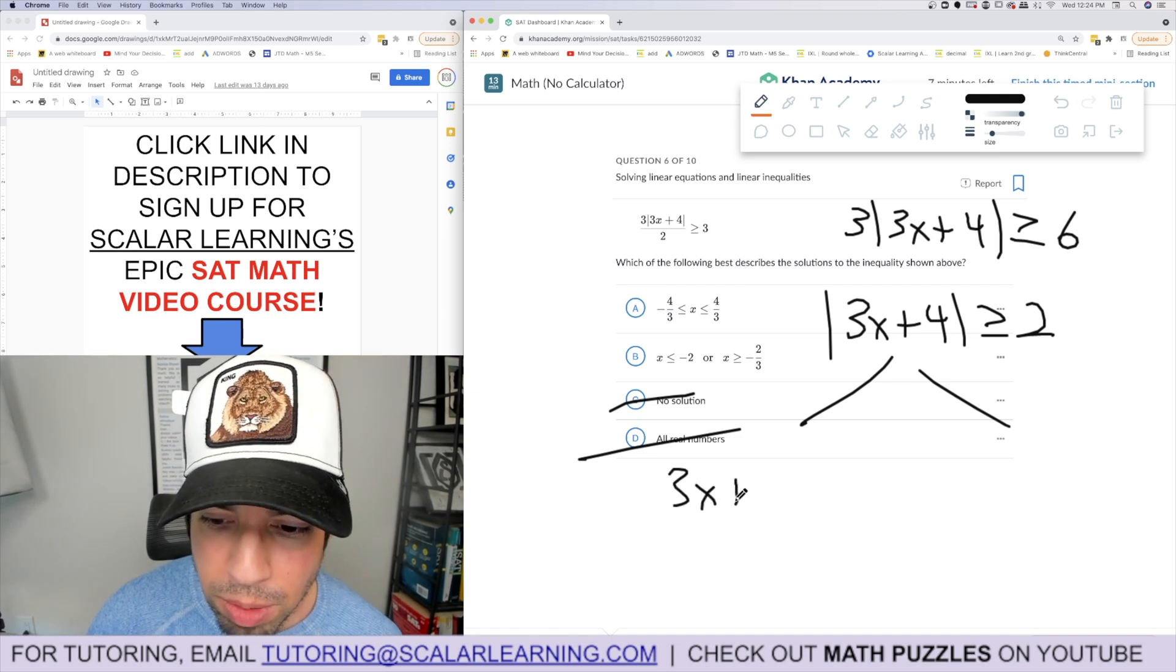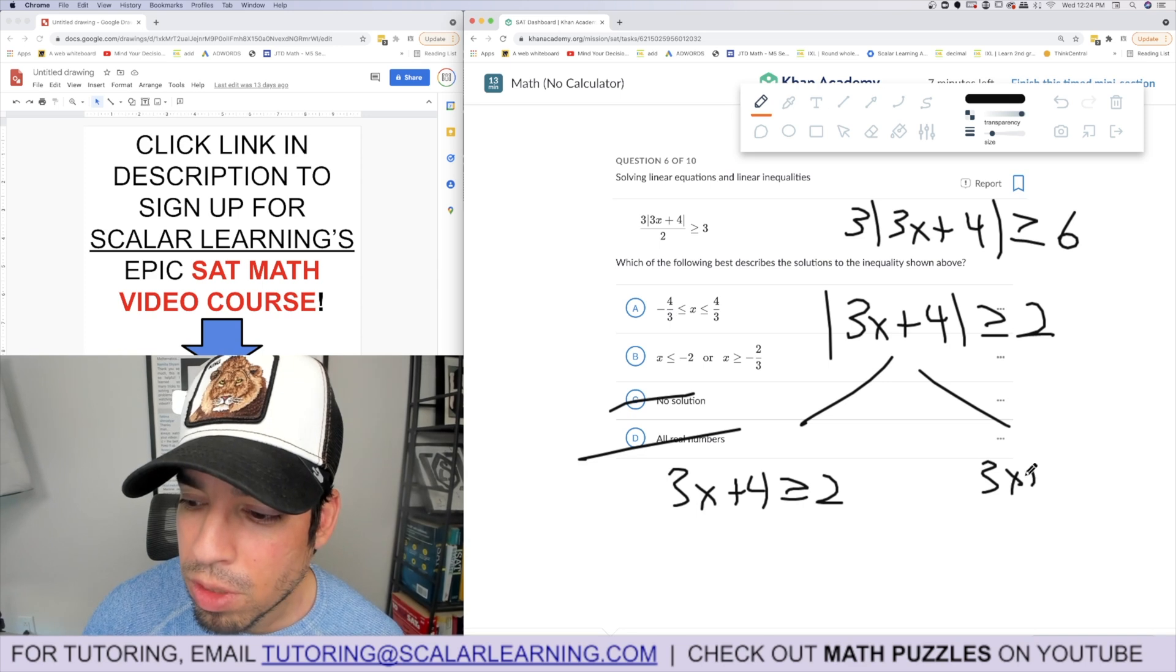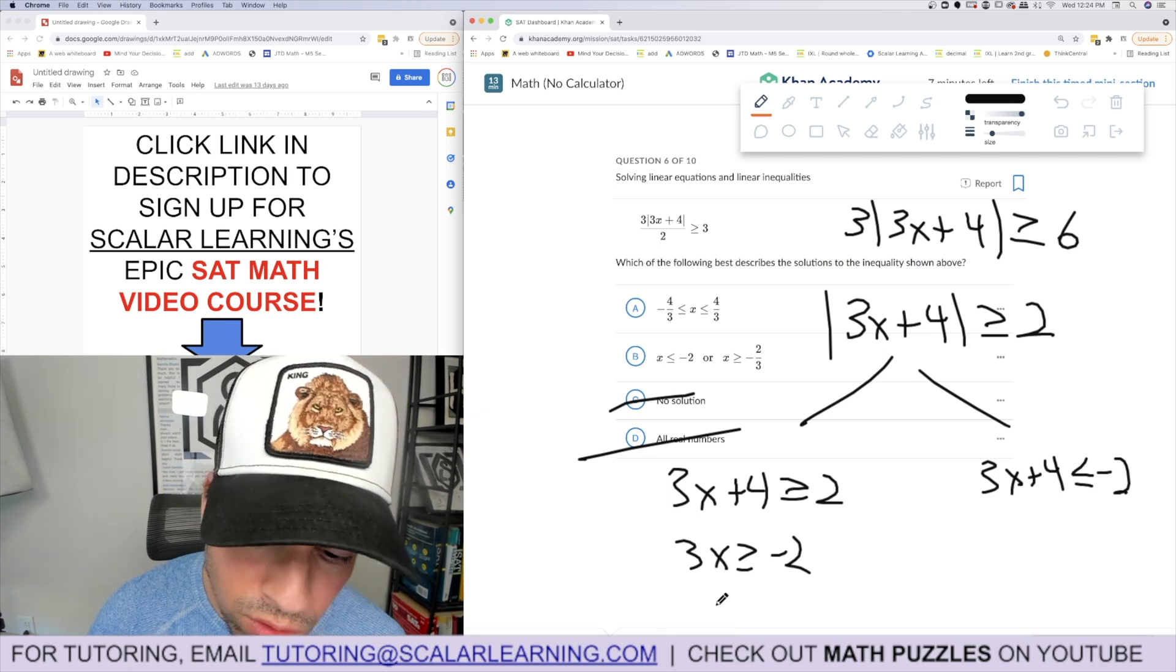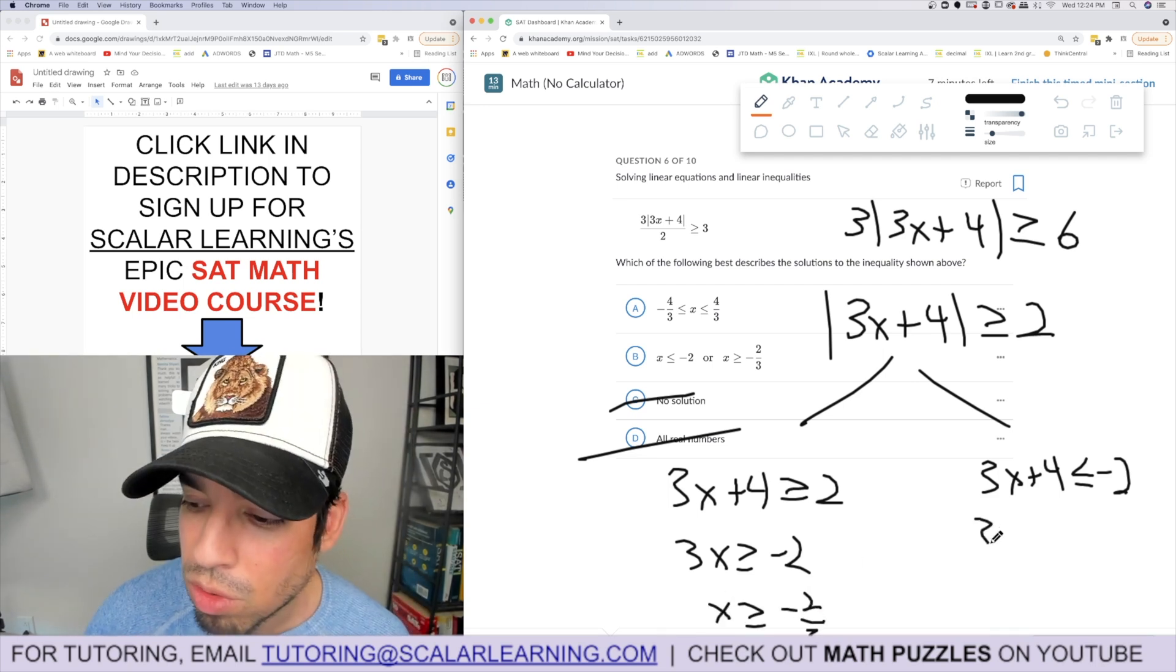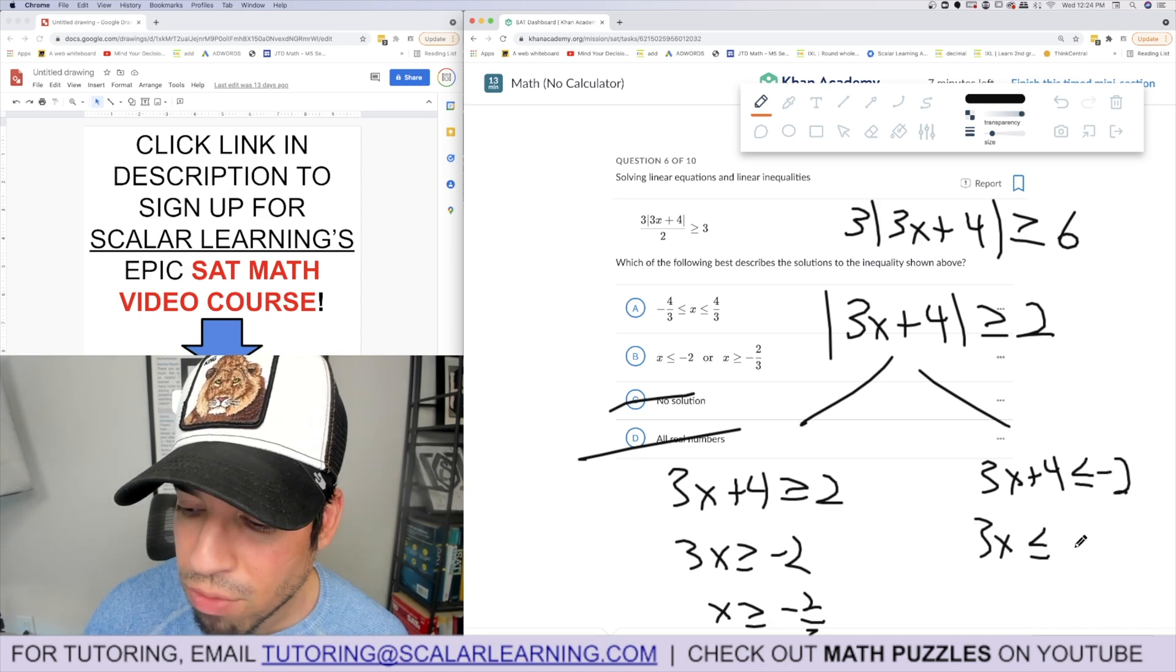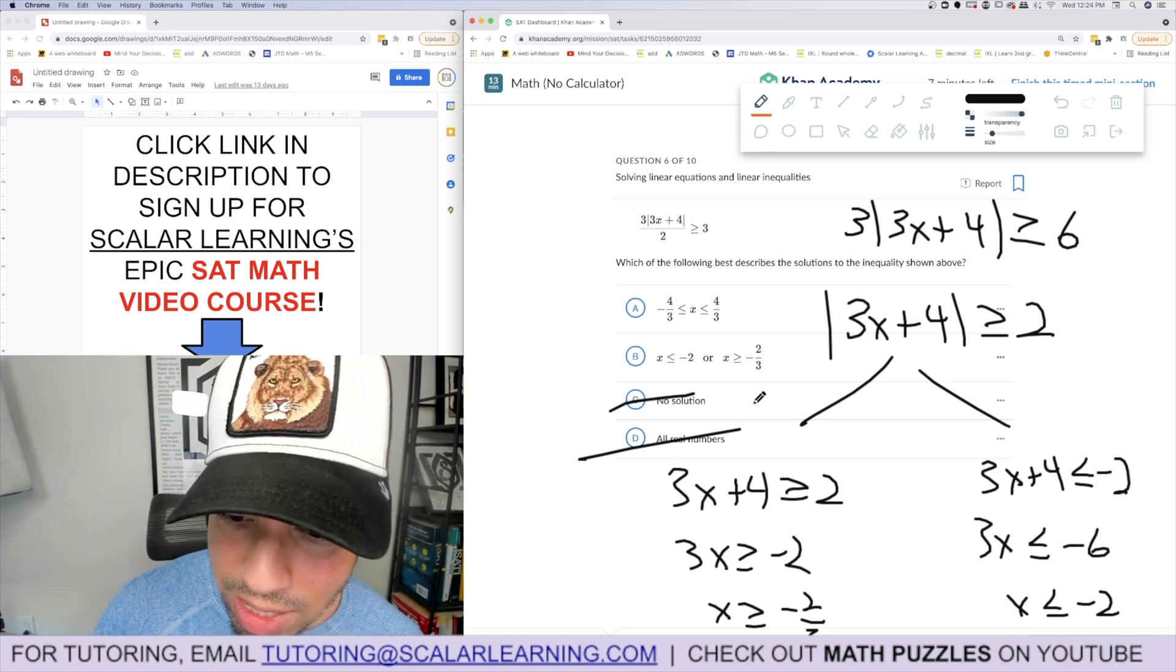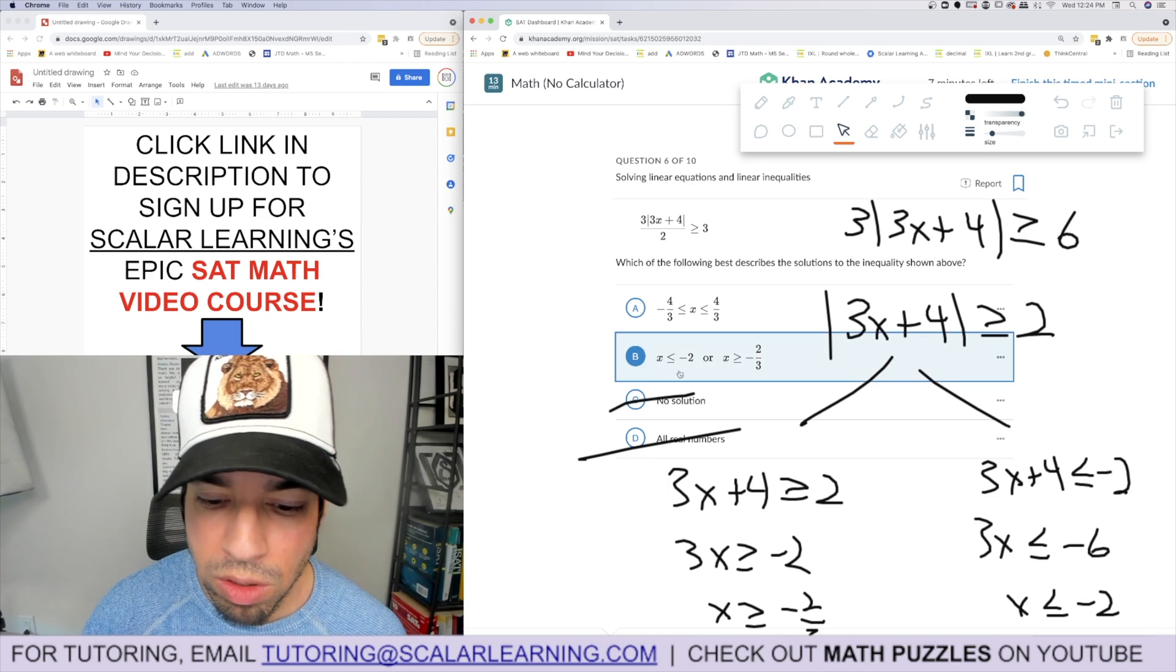So then we get 3x plus 4 is greater than or equal to 2, and then 3x plus 4 is less than or equal to negative 2. 3x is greater than or equal to negative 2, x is greater than or equal to negative two-thirds. And then this one is 3x is less than or equal to, subtract 4 from both sides, negative 6, x is less than or equal to negative 2. So less than or equal to negative 2, greater than or equal to negative two-thirds. B is the winner. Done.